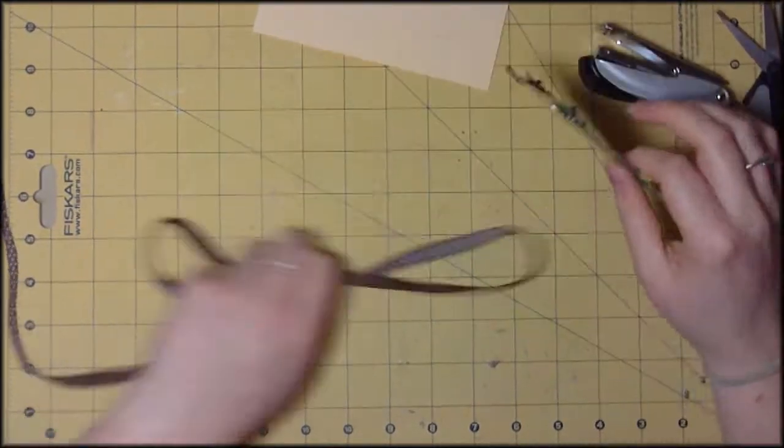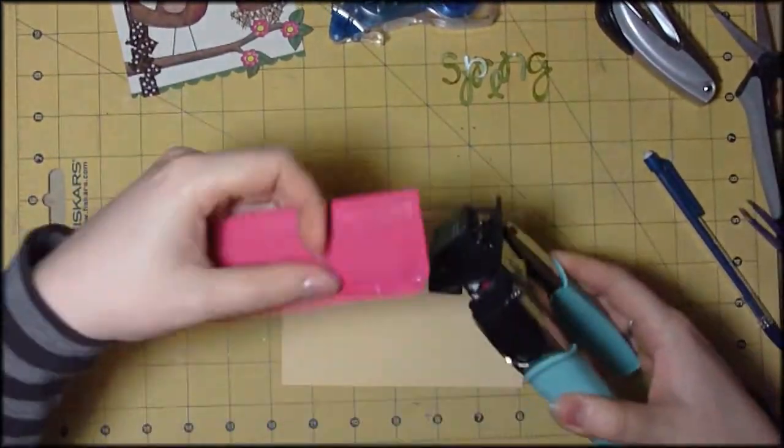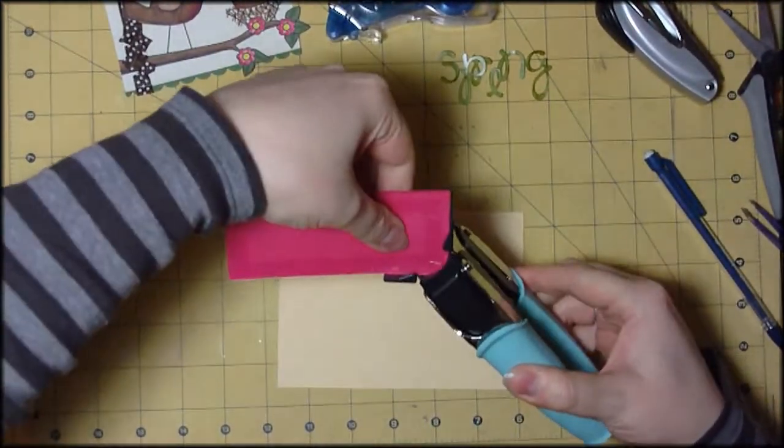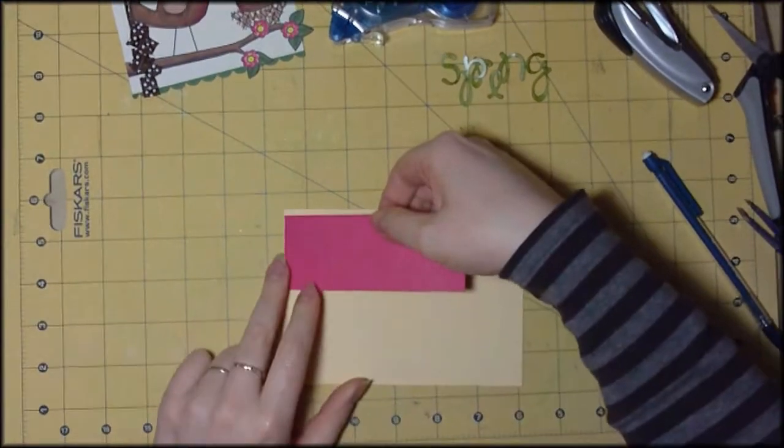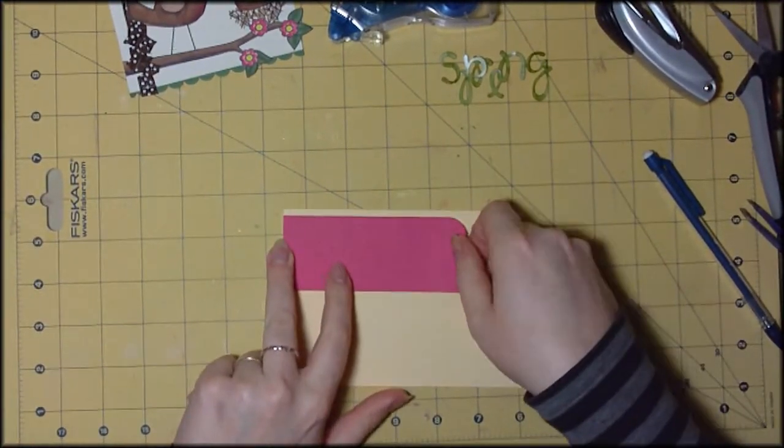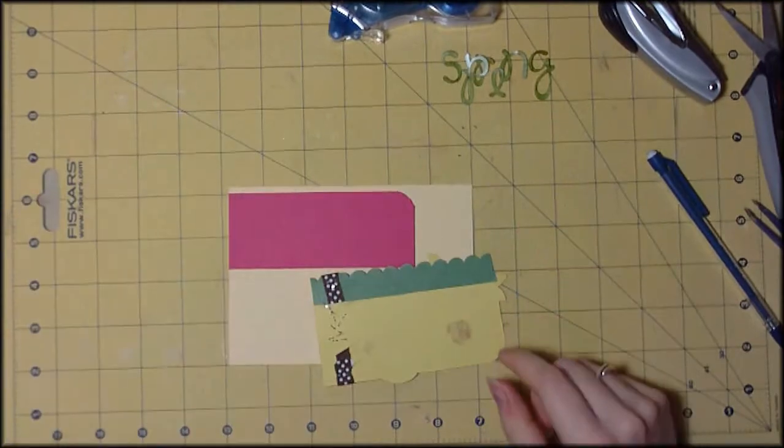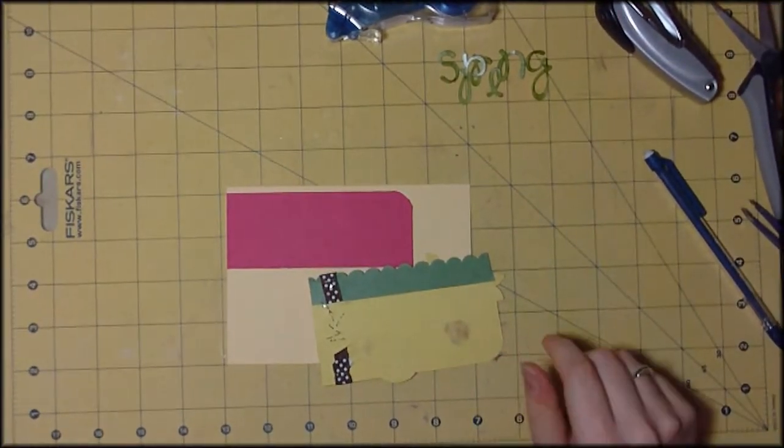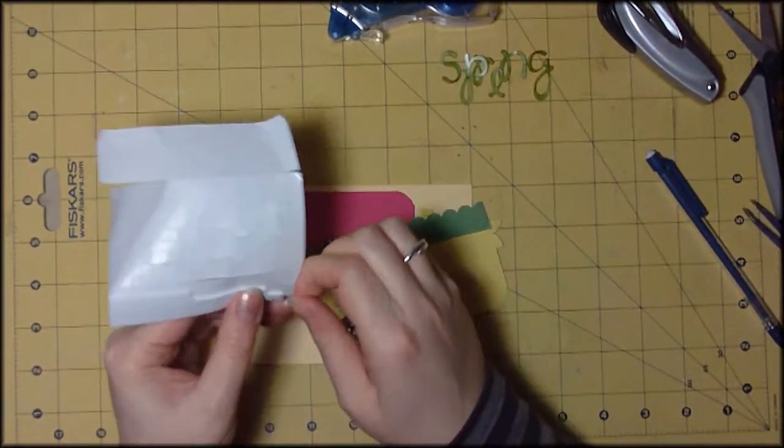Now this is the bit I changed my mind on. I decided to add a little bit of pink cardstock onto the top of the card and I've just used some glue roller to adhere that down. I'm going to use the three-dimensional stickers to adhere that topper I colored in earlier down.